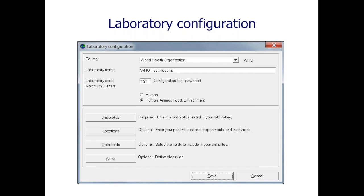Then you can enter locations. Location means what you want it to mean. In a hospital, location typically means the name of the ward or clinic - ICU, medicine male, medicine female. If you work in a national center like EPHI, the location might be the name of the hospital, town, district, or region. In an animal laboratory, location might be the name of the farm, market, or veterinary clinic. In a food laboratory, it might be the name of the restaurant or market. Location is a very general word - you define it in the way most useful to you.